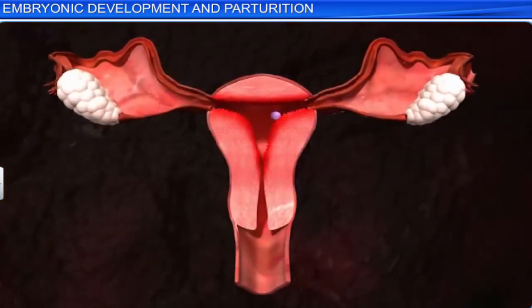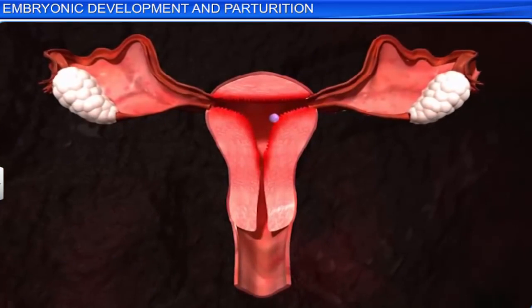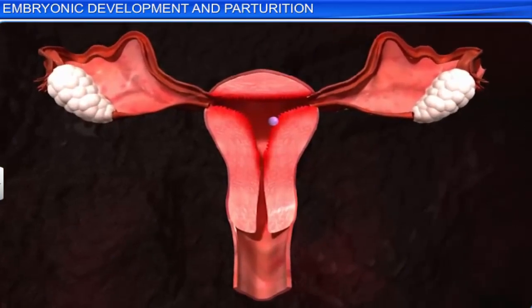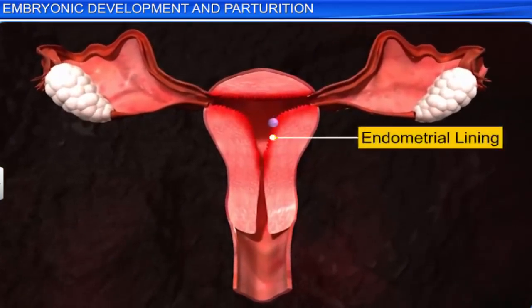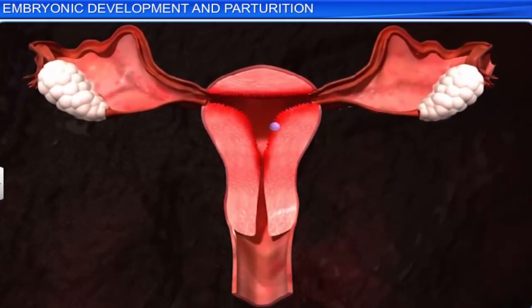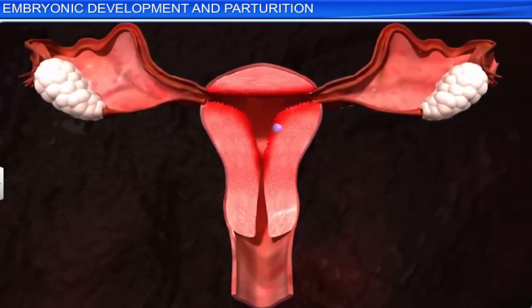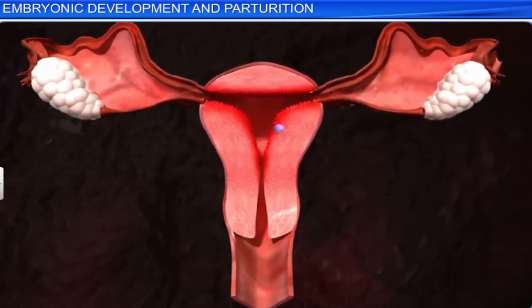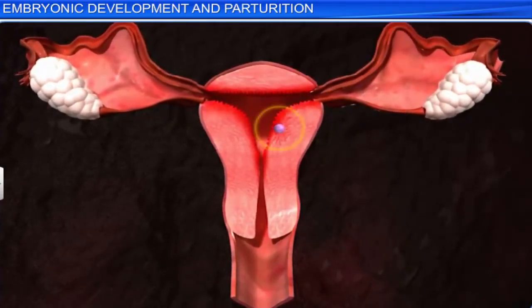As the trophoblast grows outwards and penetrates the endometrial lining of the uterus, the blastocyst with a developing embryo gets implanted in the uterus, and pregnancy is initiated.